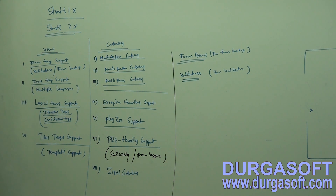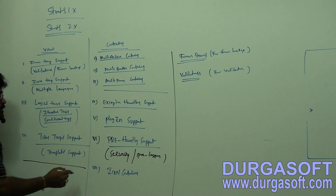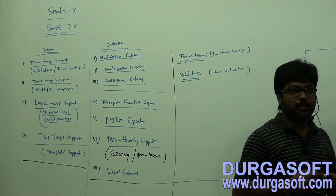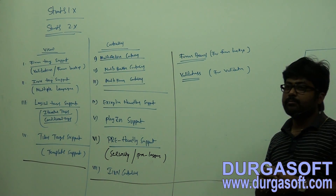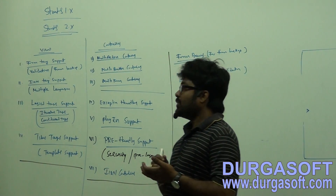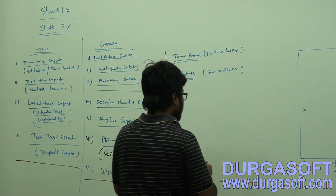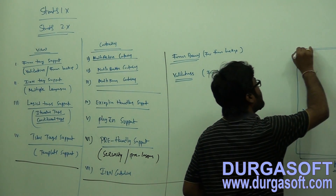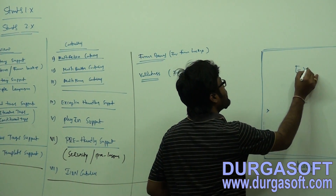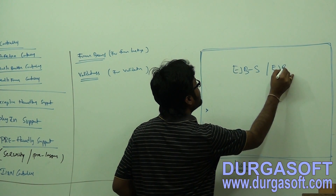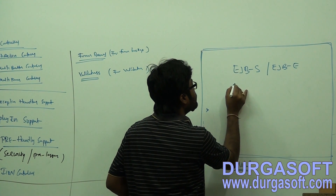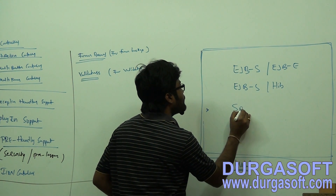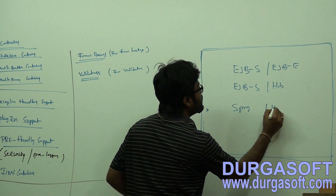These are the features for presentation and controller. For the model part, Struts does not provide any support. For the model part you have to use Spring or EJBs — for example, EJB session beans and entity beans, or EJB session beans with Hibernate, or Spring with Hibernate combination.